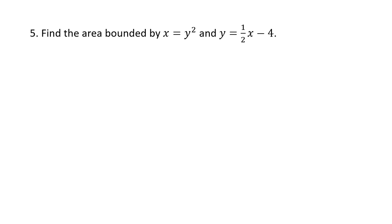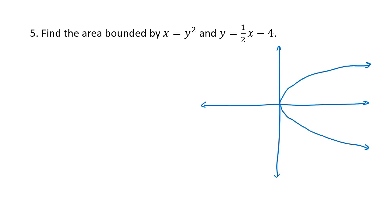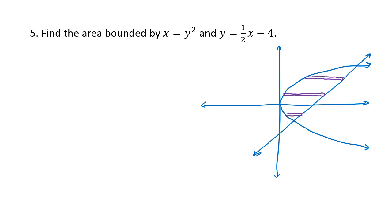For the last example, one function is solved for x and one for y, so we need a picture. Drawing x equals y squared gives a sideways parabola, and y equals one-half x minus 4 is a line with slope 1/2 and y-intercept negative 4. Slicing vertically would require two separate integrals due to inconsistency in which function is on top. By contrast, slicing horizontally has no such inconsistency — all horizontal rectangles have the line on the right and the parabola on the left — so we only need one integral.